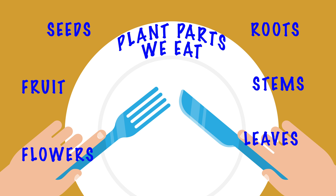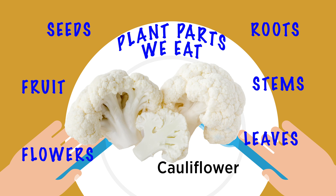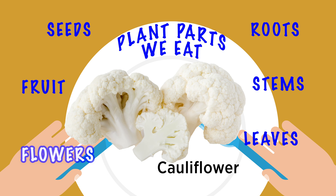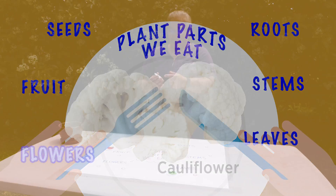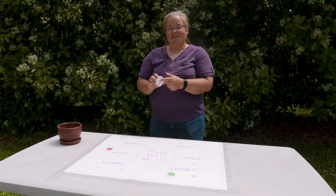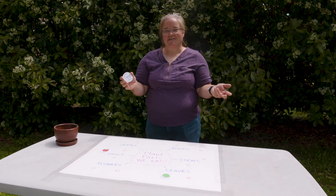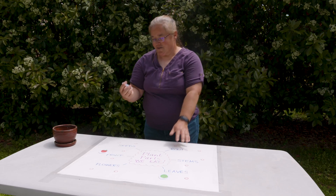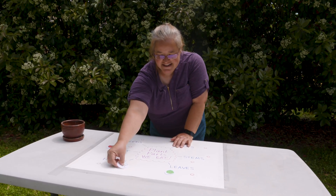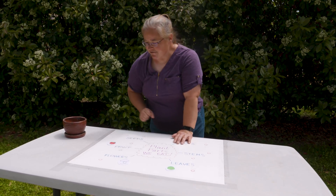This one kind of gives it away — cauliflower. We're actually eating the flower. If you have broccoli or cauliflower and you let it get old, all these little buds will actually open up and be flowers. So when you're eating cauliflower, you're actually eating little flowers.